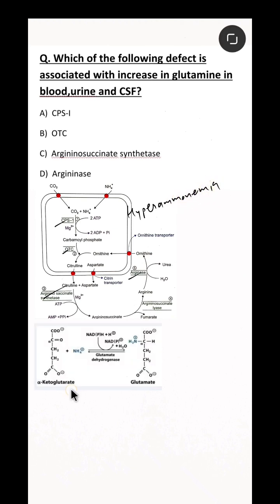Normally you know that alpha-ketoglutarate will trap amino group from amino acid and form glutamate. And in ammonia intoxication, there is excess formation of glutamate.